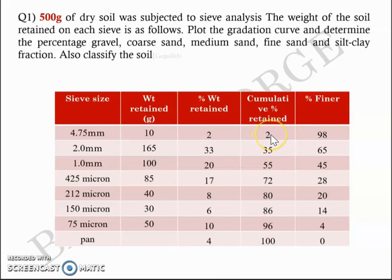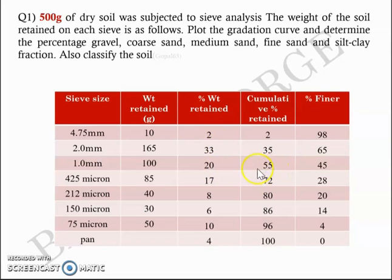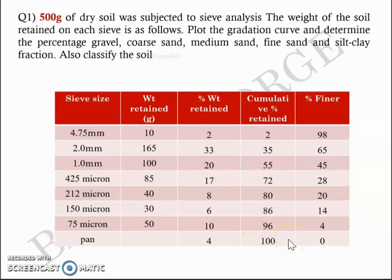Cumulative percentage weight retained: if you take an example, you have 2 here, and 35 is 2 plus 33, and 55 is 2 plus 33 plus 20. So what you do is you take the cumulative values of all the weight percentages which fall above the particular sieve. So you can fill this column, the sum of which should be equal to 100 at the pan.